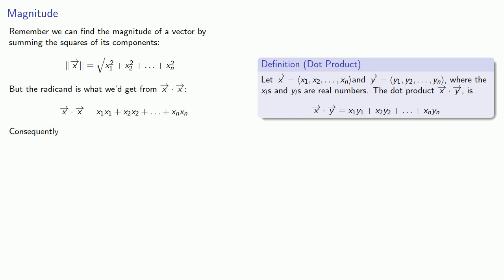And consequently, we can say that if the components of a vector are real numbers, then the magnitude of the vector is the square root of the vector dotted with itself.